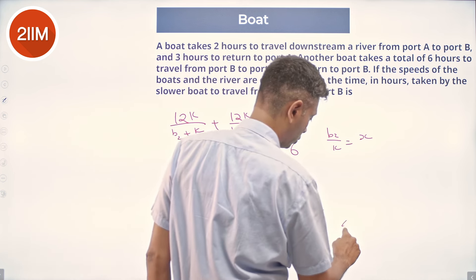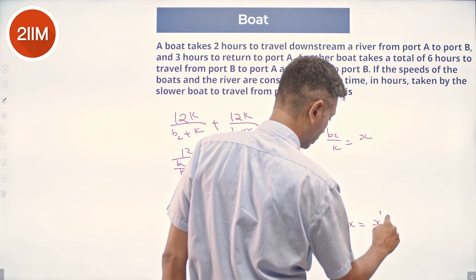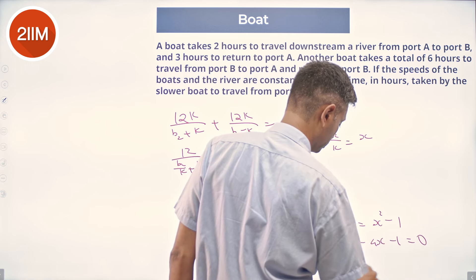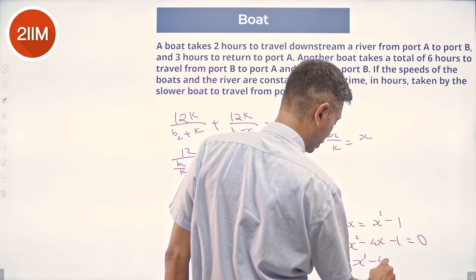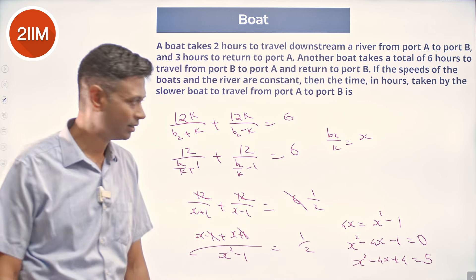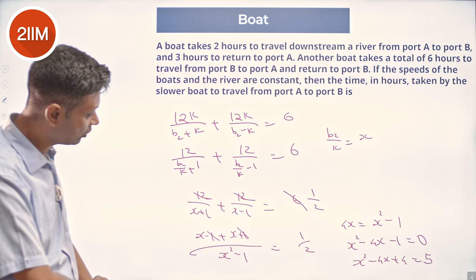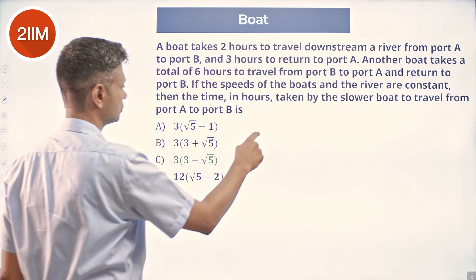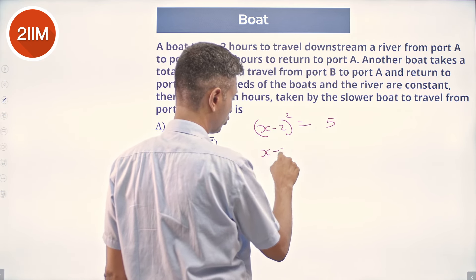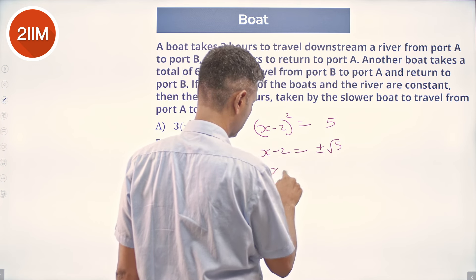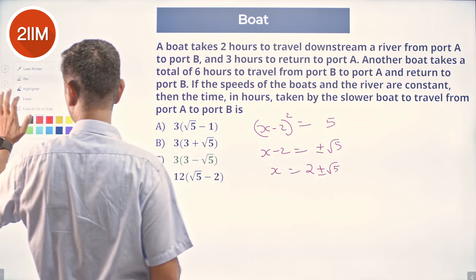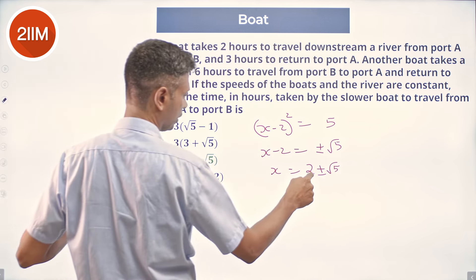So, x minus 1 plus x plus 1 by x square minus 1 equal to 1 by 2. 2x 4x, so 4x equals x square minus 1, x square minus 4x minus 1 equal to 0, x square minus 4x plus 4 is equal to 5. So, x minus 2 the whole square is 5, x minus 2 is plus or minus root 5, x is 2 plus or minus root 5. It cannot be 2 minus root 5, it will become negative, we are talking about a nice ratio, it will be 2 plus root 5.